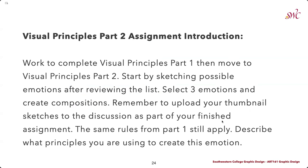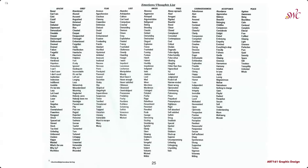In Part 2 of this assignment, you're going to work on combining different principles from Part 1 to express a certain idea or emotion. You'll start by sketching possible emotions after reviewing the list, and you're going to select three emotions and create compositions. Remember to upload your thumbnail sketches to the discussion as part of your finished assignment. The same rules apply from Part 1: you're only going to be using points, lines, and planes — only those specific shapes within the composition, no more than seven shapes. Make sure to describe what principles you are using to create each emotion.